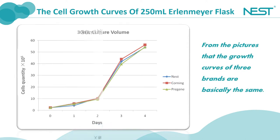For judgment of pros and cons for cell culture products, the most important criteria is the cell culture status. We can see from the pictures that the growth curves of three brands are basically the same, with little difference between that of Nest and Corning's.